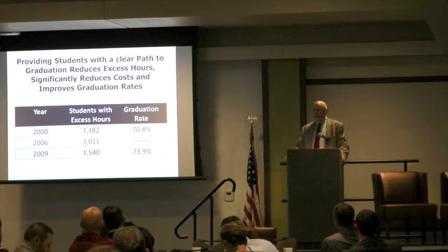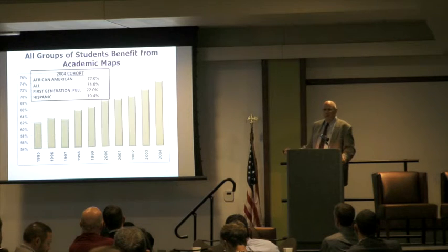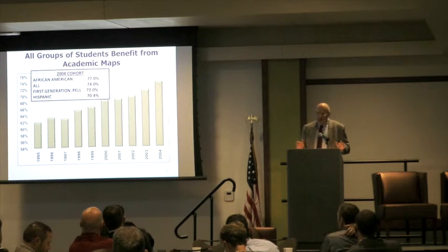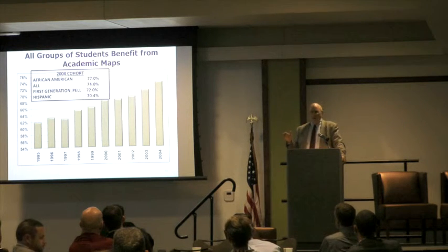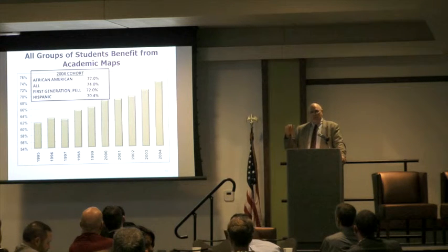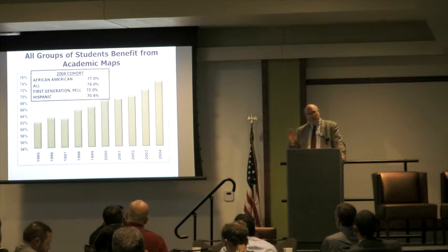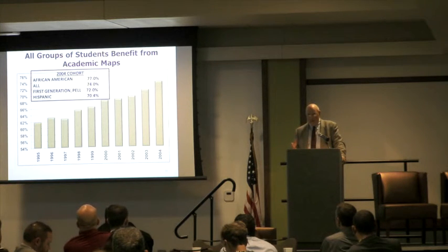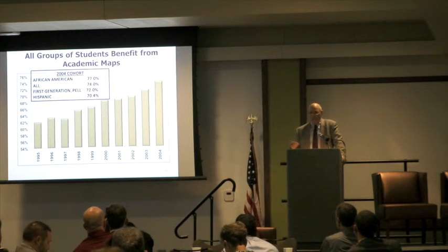When we started, we had 7,382 students stuck with a 70% graduation rate. We got that down to about 1,500 and started adding improvements in both retention and graduation. We made mistakes along the way. In '99 — actually starting in '96 — when we put in academic maps, you can see the graduation rate started improving and the retention rate went from 82% to 92%. We started generating more revenue by increasing tuition collection.